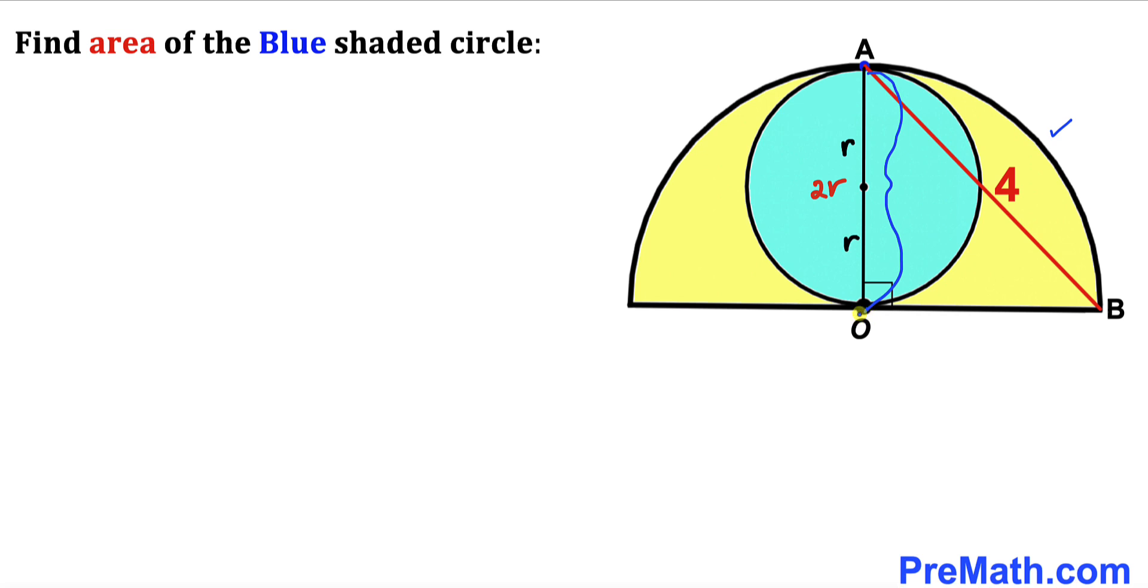And likewise, this OB is the radius for the very same semicircle. If the radius is 2r for this semicircle, then this radius is going to be 2r as well.